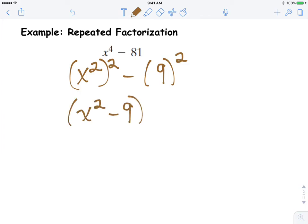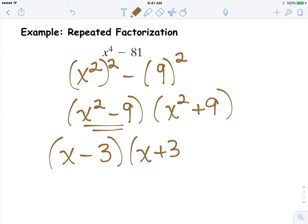x squared minus 9 and x squared plus 9. Now notice this first parenthesis is another difference of 2 squares. So it can be factored as x minus 3 and x plus 3, and then we have x squared plus 9.